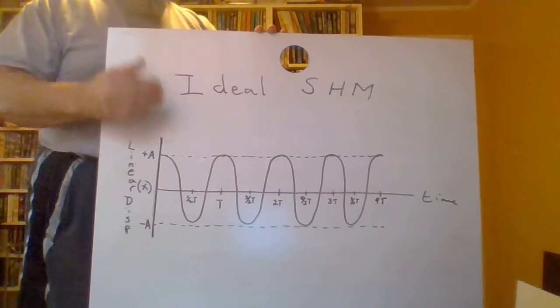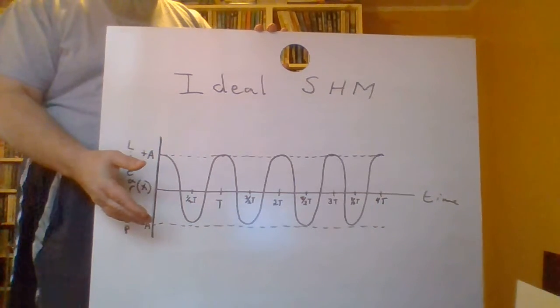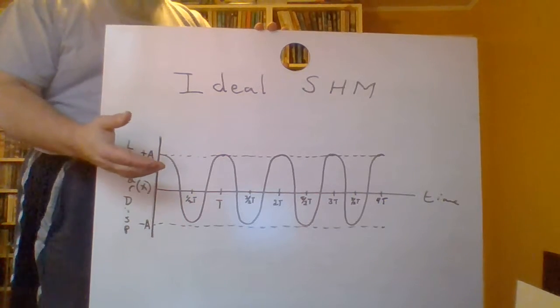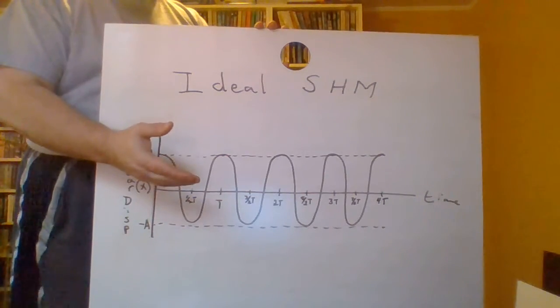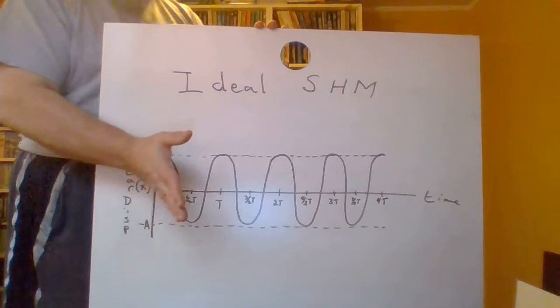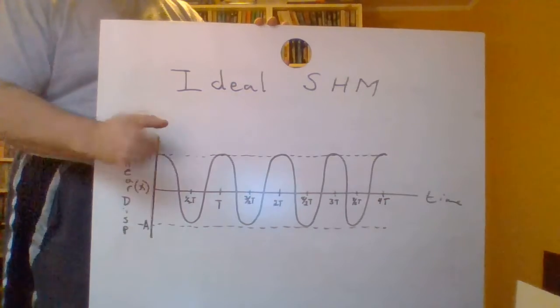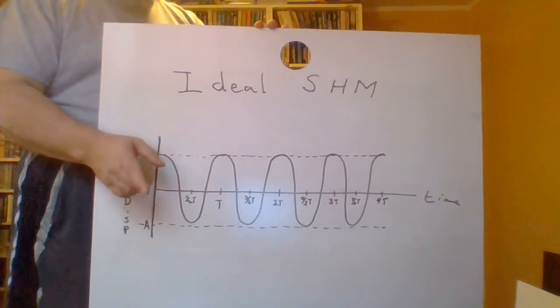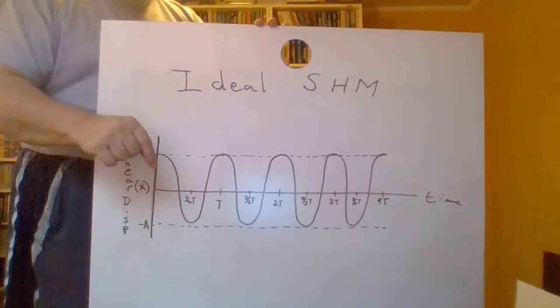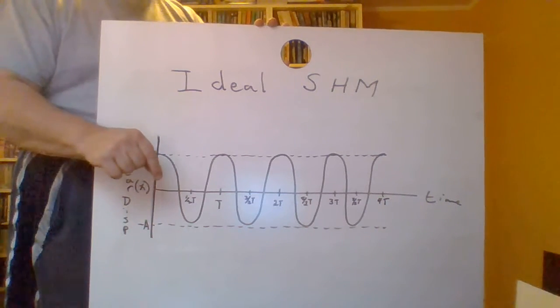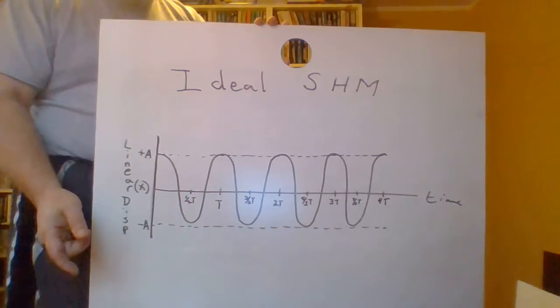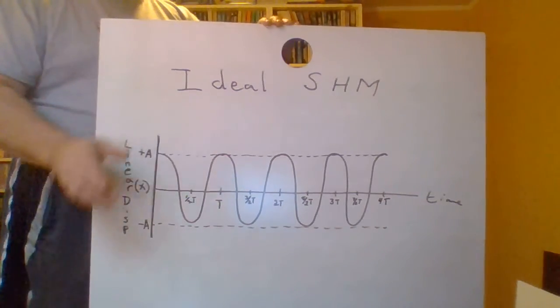Now, what happens if we have friction in the system? We all know that if you watch a pendulum long enough, the amount of time it takes to swing doesn't change — that's key. The time the swing takes doesn't change, but the distance that it swings decreases over time. That's what we mean by attenuation. Attenuated simple harmonic motion looks like this.